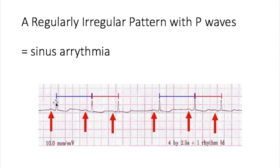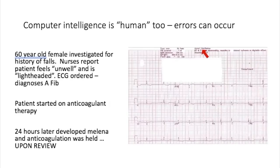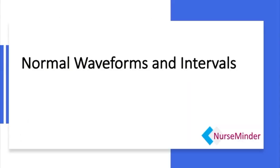Additionally, the R-to-R interval between these QRS complexes matches the measurement elsewhere on the strip, showing a pattern consistent with changes during inhalation and exhalation — sinus arrhythmia, which would not be treated with anticoagulants. The key takeaway: because the computer gives a diagnosis, do not simply accept it. Consider it wrong until you prove it right. It may say atrial fibrillation, but don't believe it until you do your own analysis. Next we will look at normal waveforms and intervals to determine whether an ECG is normal or abnormal.